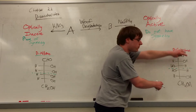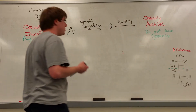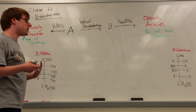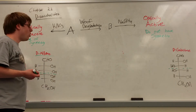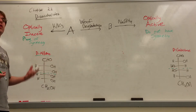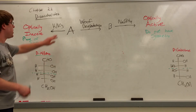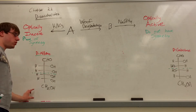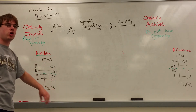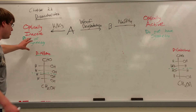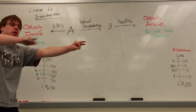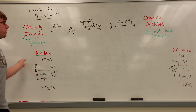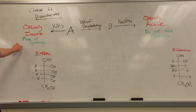So out of eight possible sugars, we've narrowed it down to two — D-allose and D-galactose are the only two aldohexoses that, when treated with HNO3, produce a molecule that is symmetric down the center. Either one could be structure A, so we need more information.